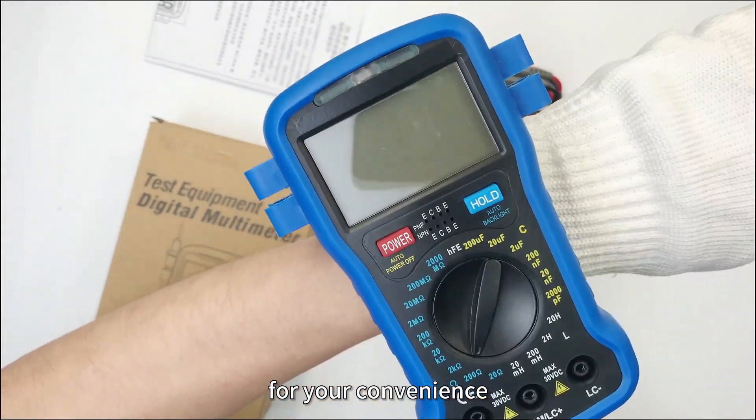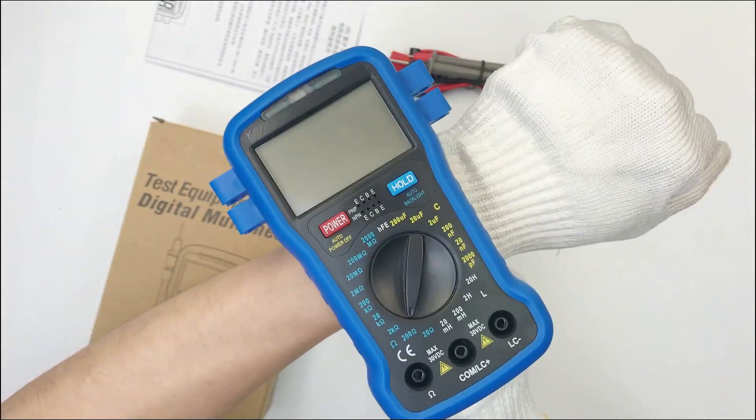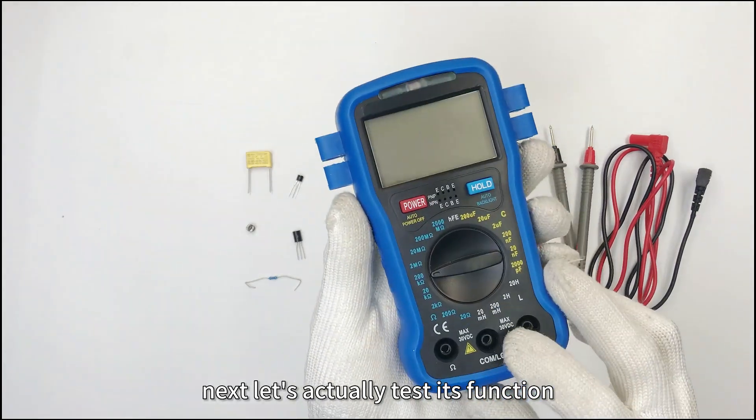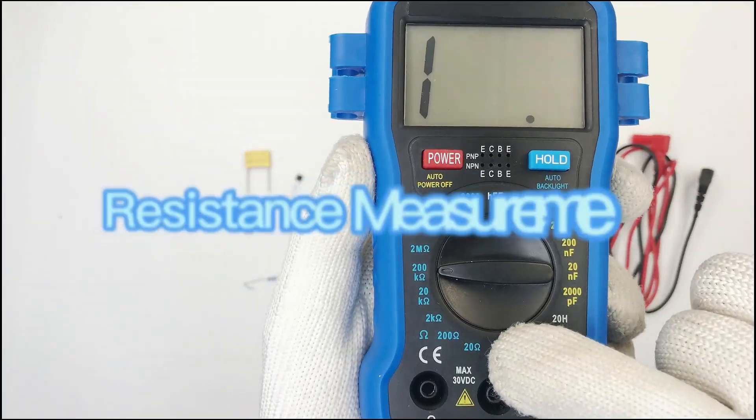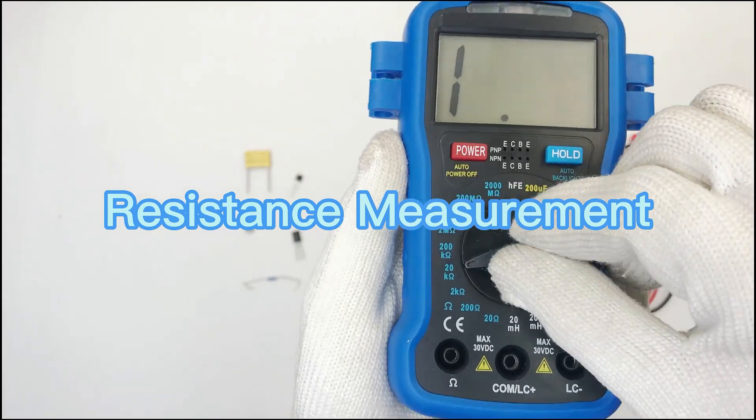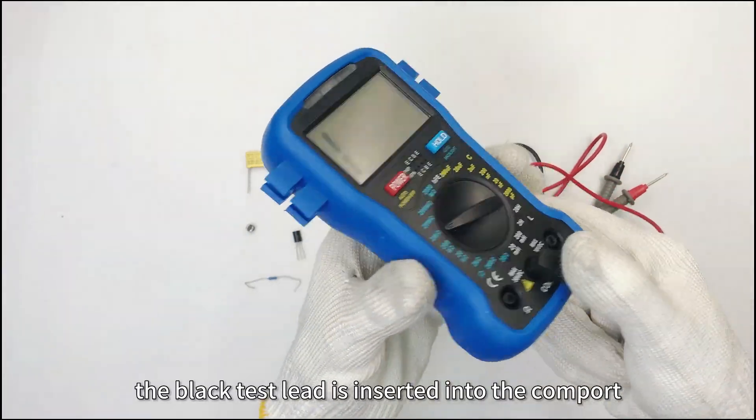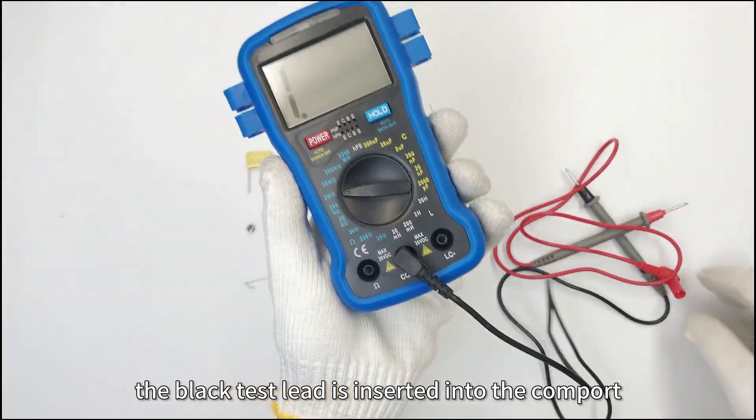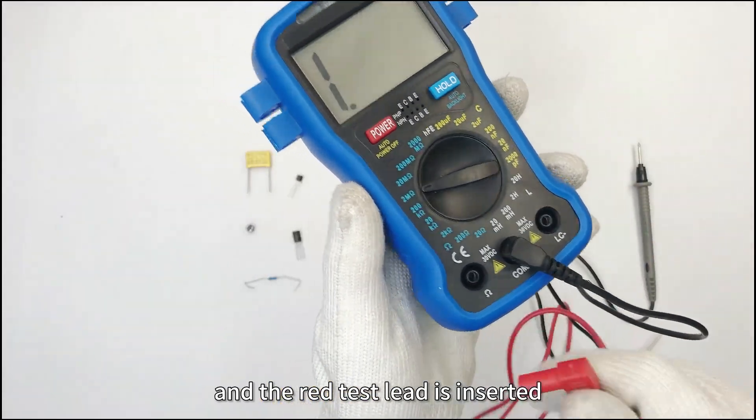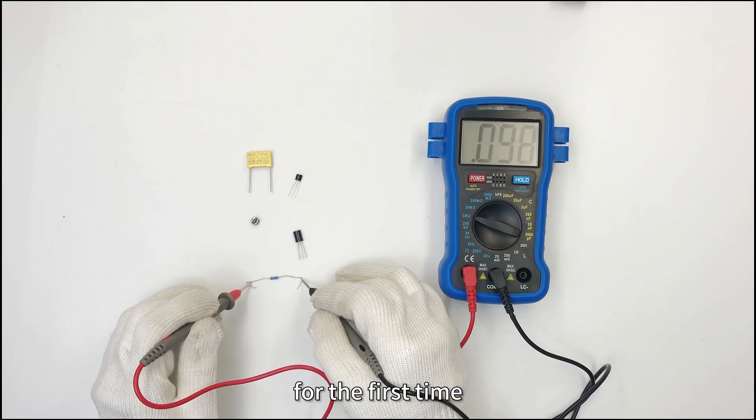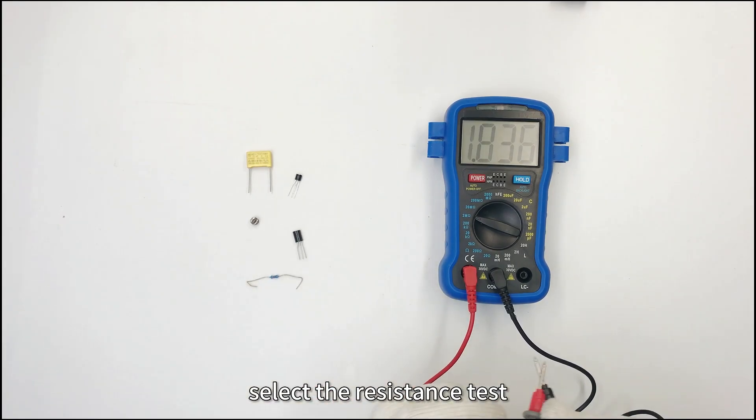Next, let's actually test its function. The black test lead is inserted into the COM port and the red test lead is inserted into the resistance port. For the first time, select the resistance test and we can see the value of the resistance measured soon.